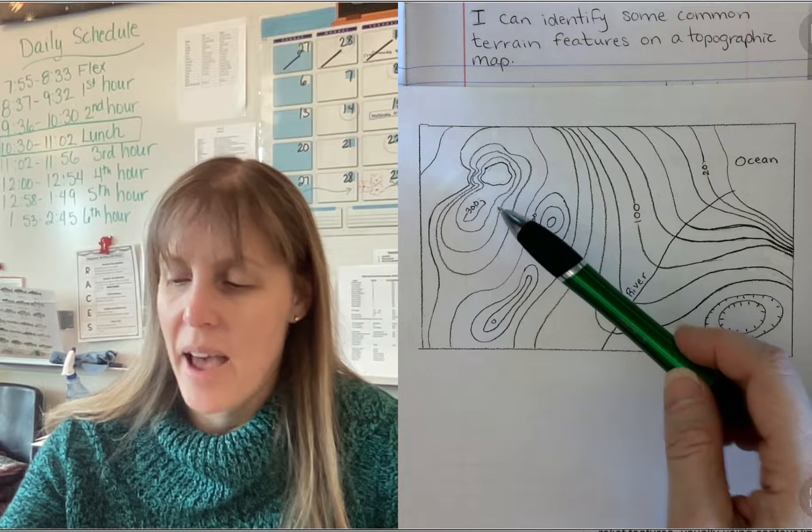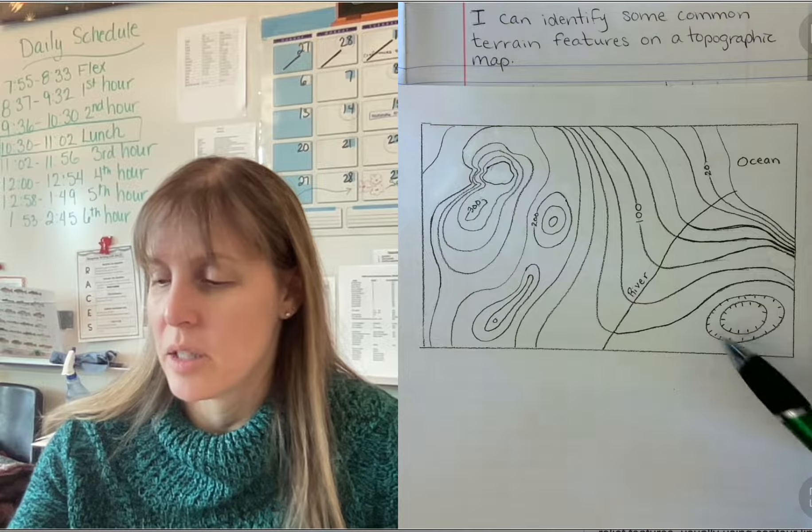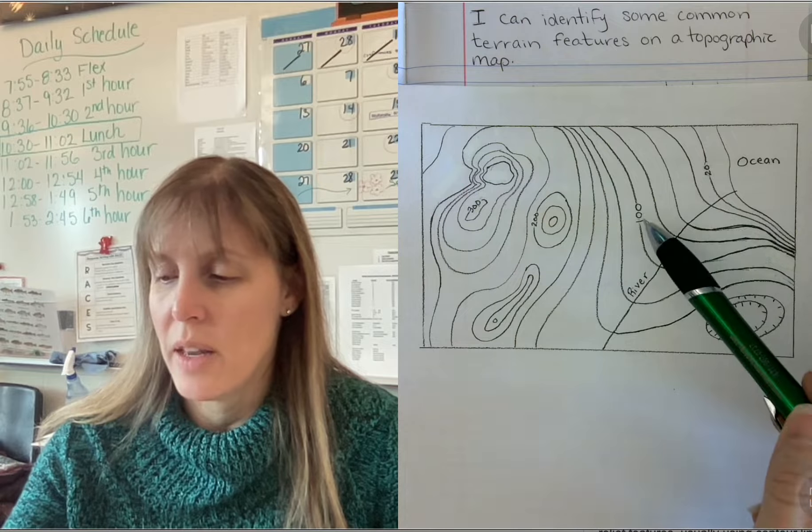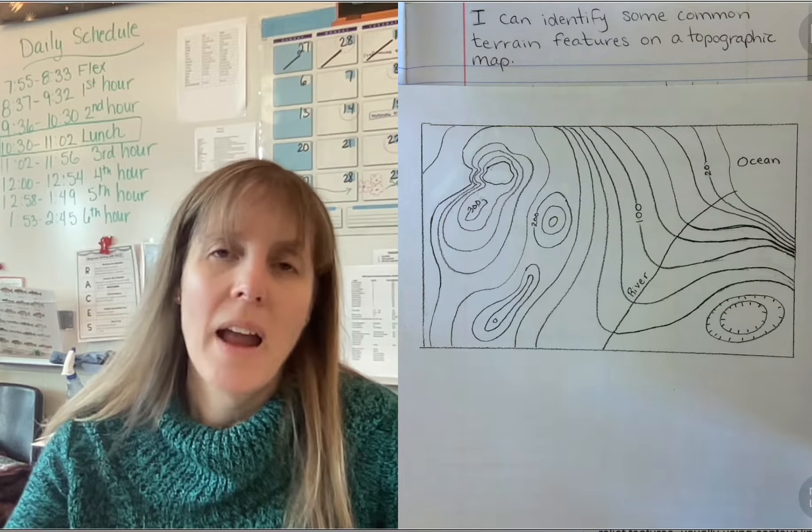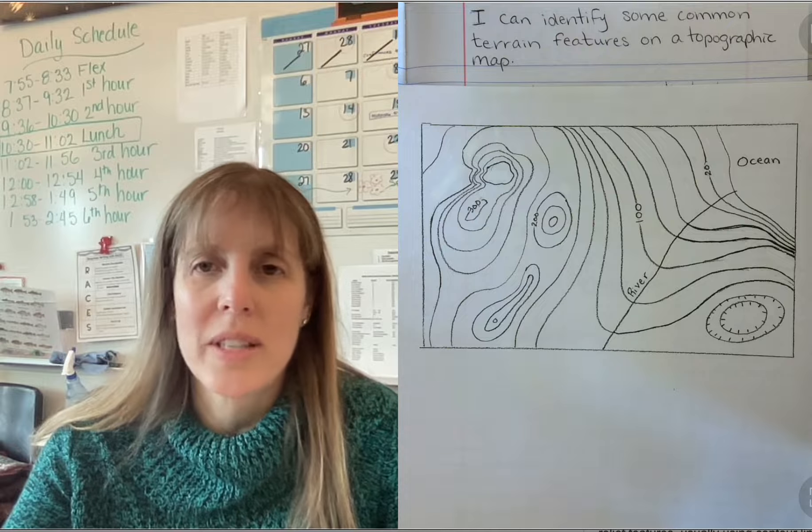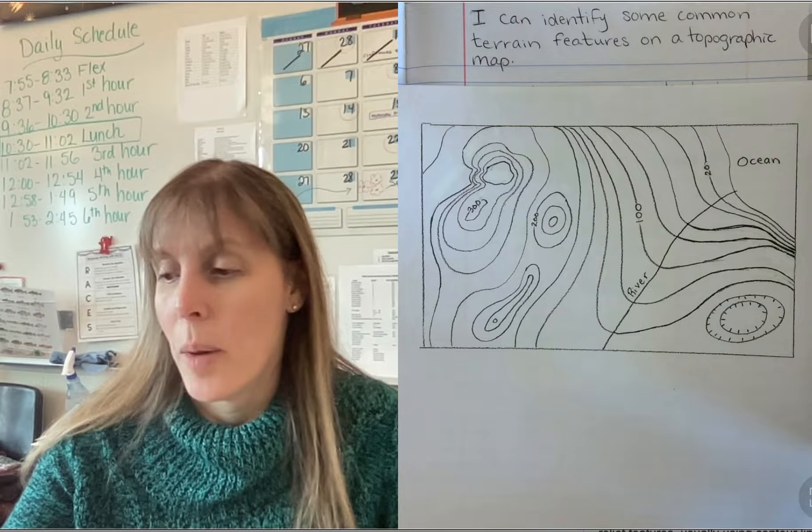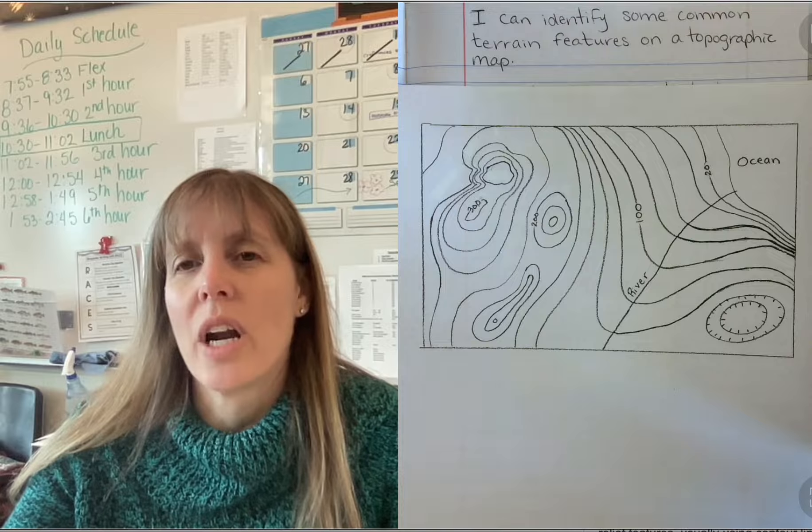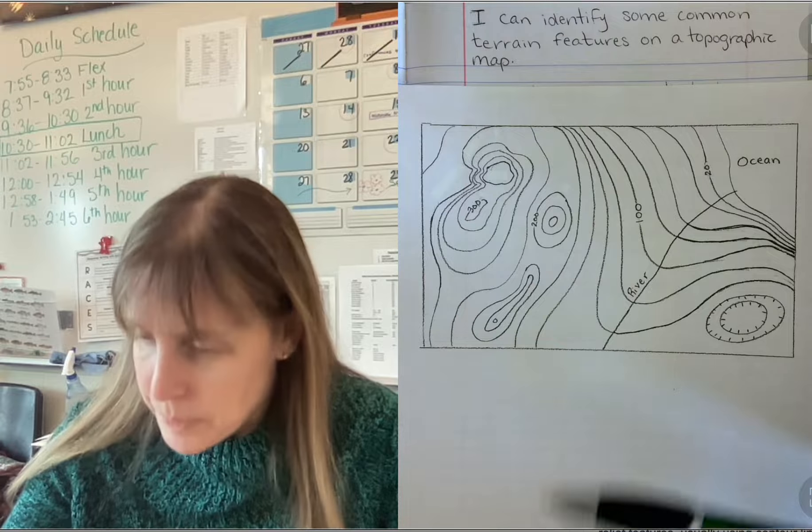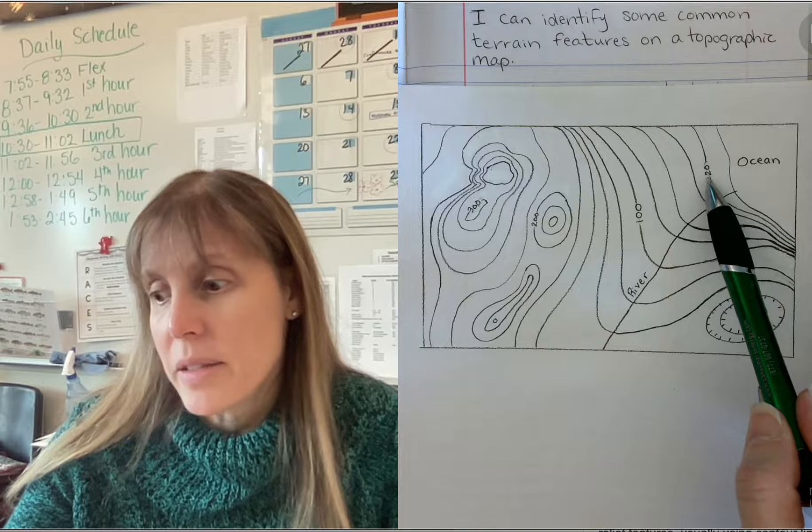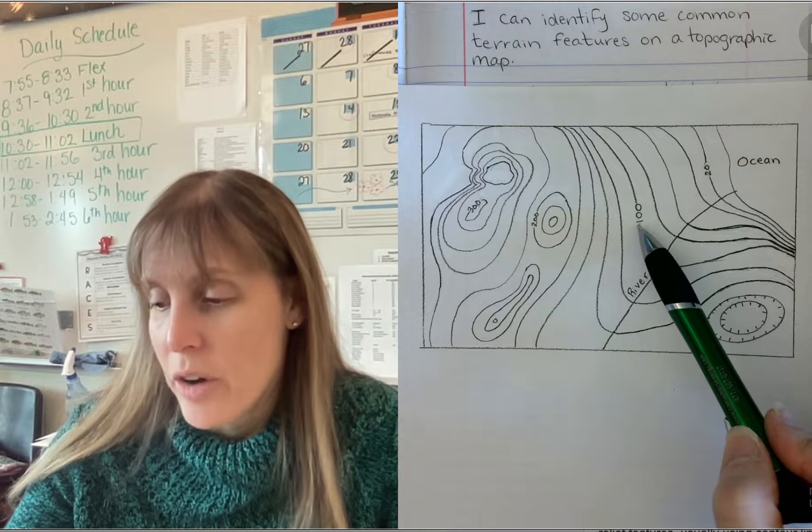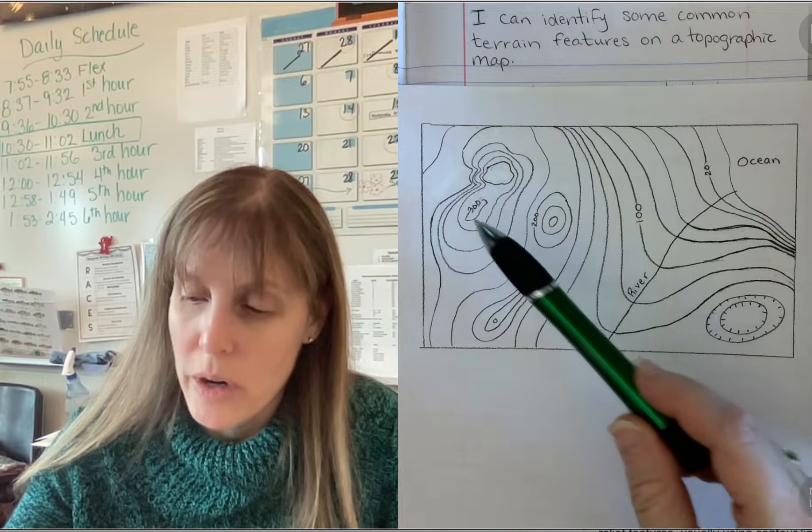This is what's called a saddle. These are hills. This is a depression. This is a river. Here's the ocean. And then you have some numbers here. And just for fun, we'll say there are feet or meters. Those are what usually are used for contour maps. And so this is 20 feet above ocean level. This is 100 feet above ocean level. This is 200 and 300.